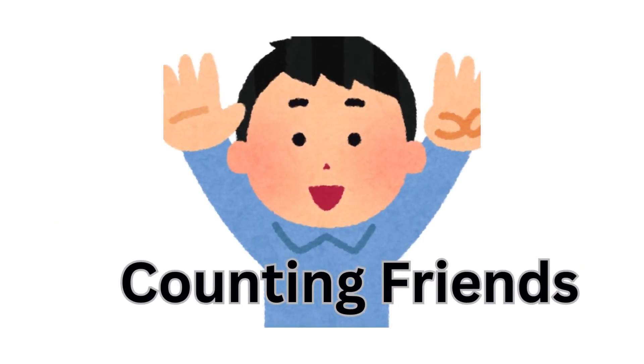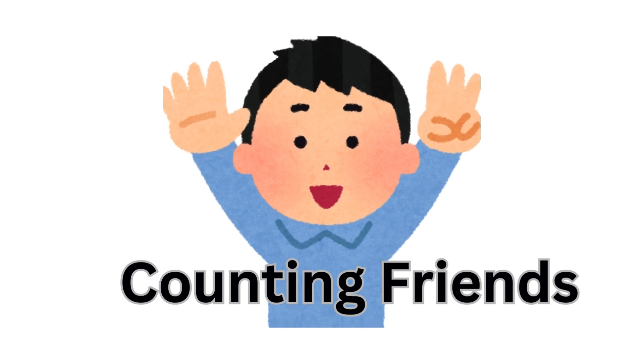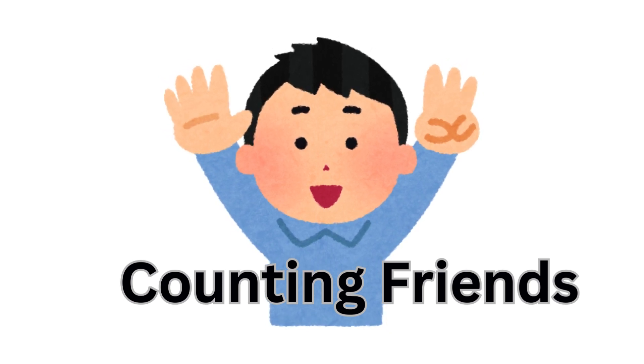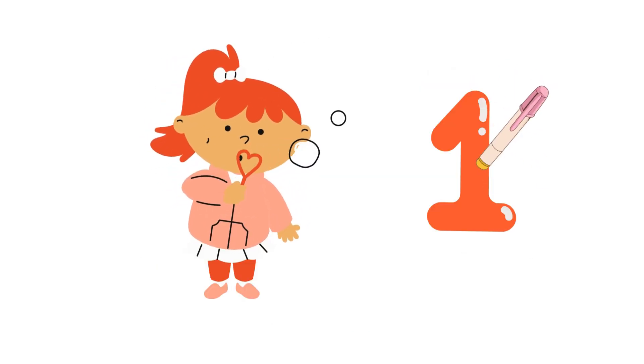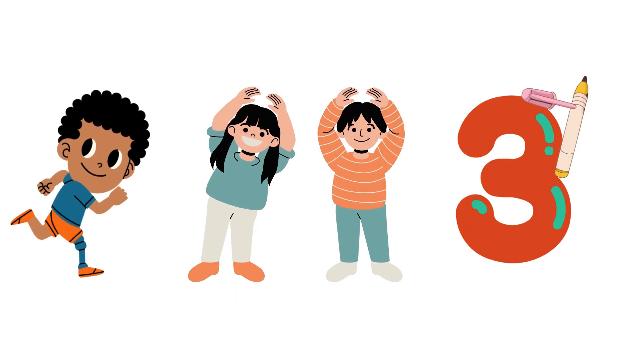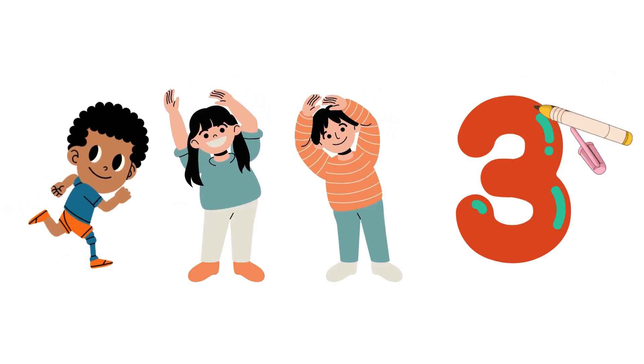Counting Friends. Imagine you're counting your friends. Each friend gets a special digit. If you have one friend, you write down the digit 1. If you have three friends, you write down the digit 3.